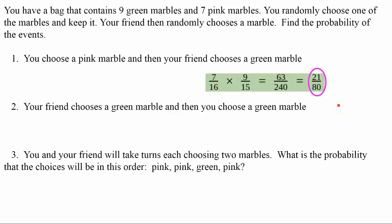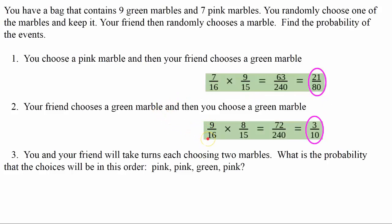Number two: your friend chooses a green marble first and then you choose a green marble. Your friend has a 9 out of 16 chance. You then choose from 15 remaining marbles, with only 8 of the 9 green marbles left, giving you an 8 in 15 chance. Multiply and simplify to get a 3 out of 10 chance of your friend choosing green and then you choosing green.